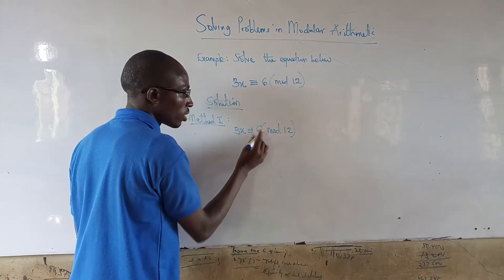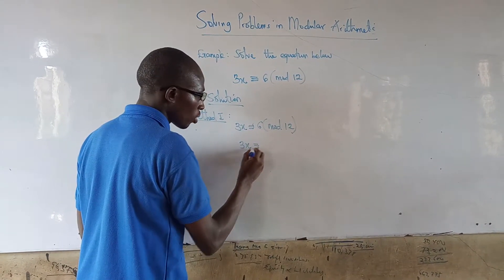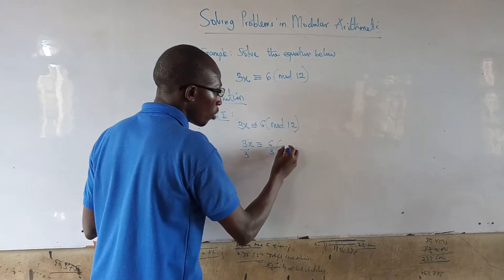It will only affect this. So in that case we have 3x over 3 congruent to 6 over 3 mod 12.